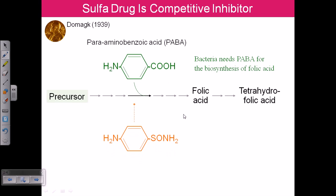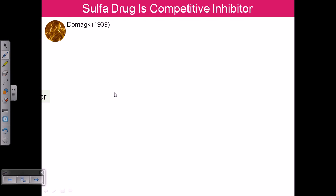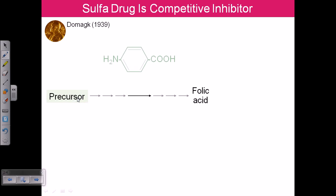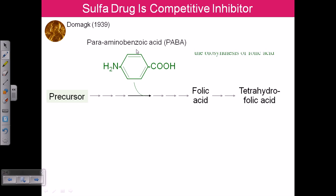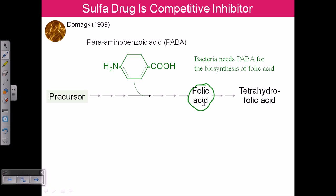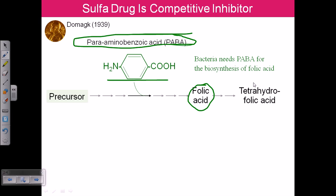Now let us talk about real-time examples. A sulfonamide drug is a competitive inhibitor. Different precursors will ultimately attach with para-aminobenzoic acid, or PABA, and then the precursor along with the PABA attachment will produce folic acid. This folic acid is then converted into tetrahydrofolate. Bacteria need PABA for their biosynthesis of folic acid.